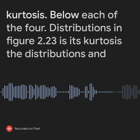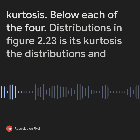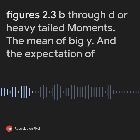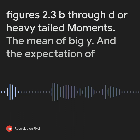Below each of the four distributions in Figure 2.23 is its kurtosis. The distributions in Figures 2.23b through d are heavy-tailed.